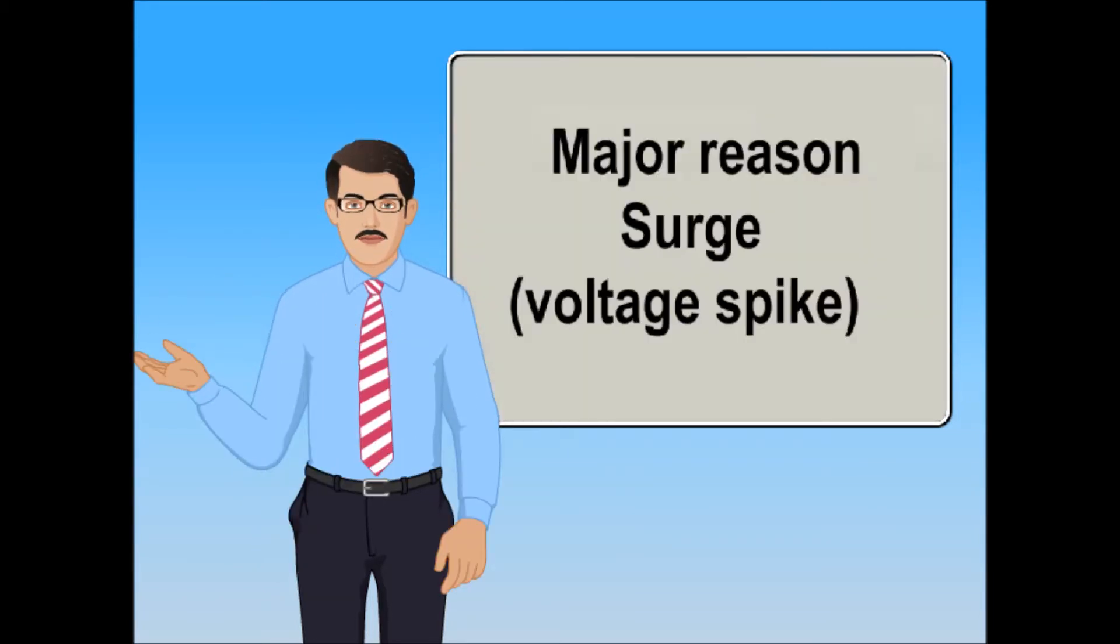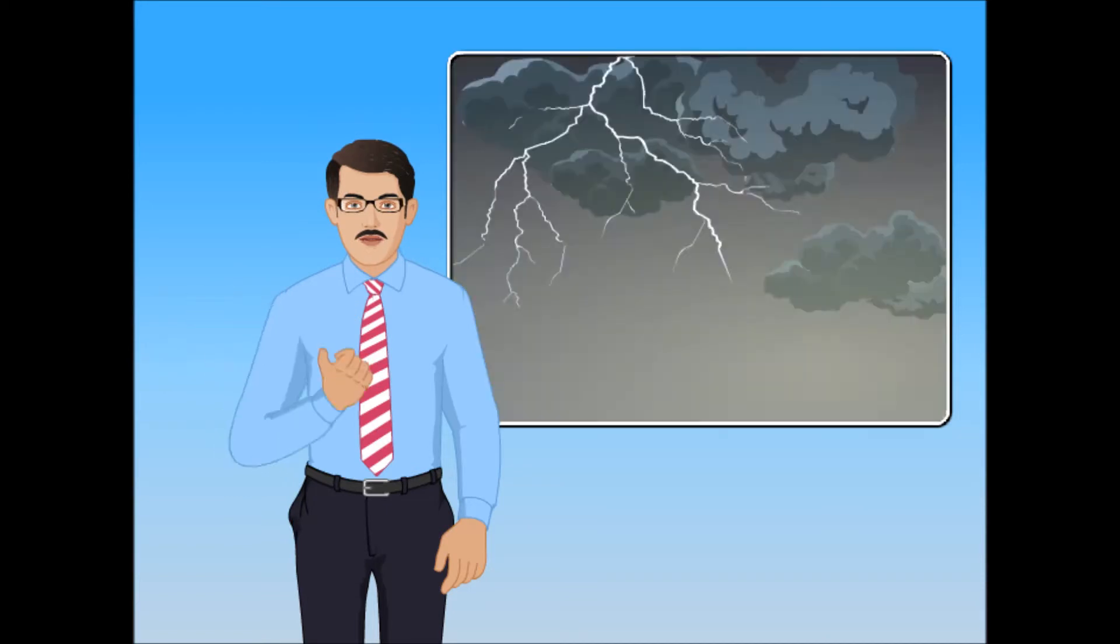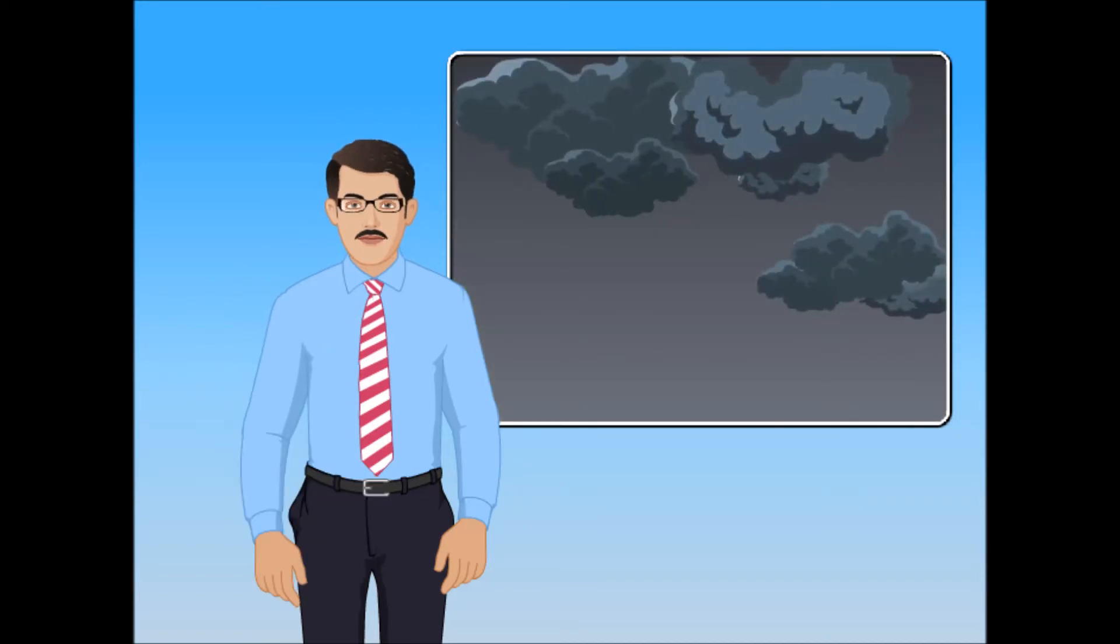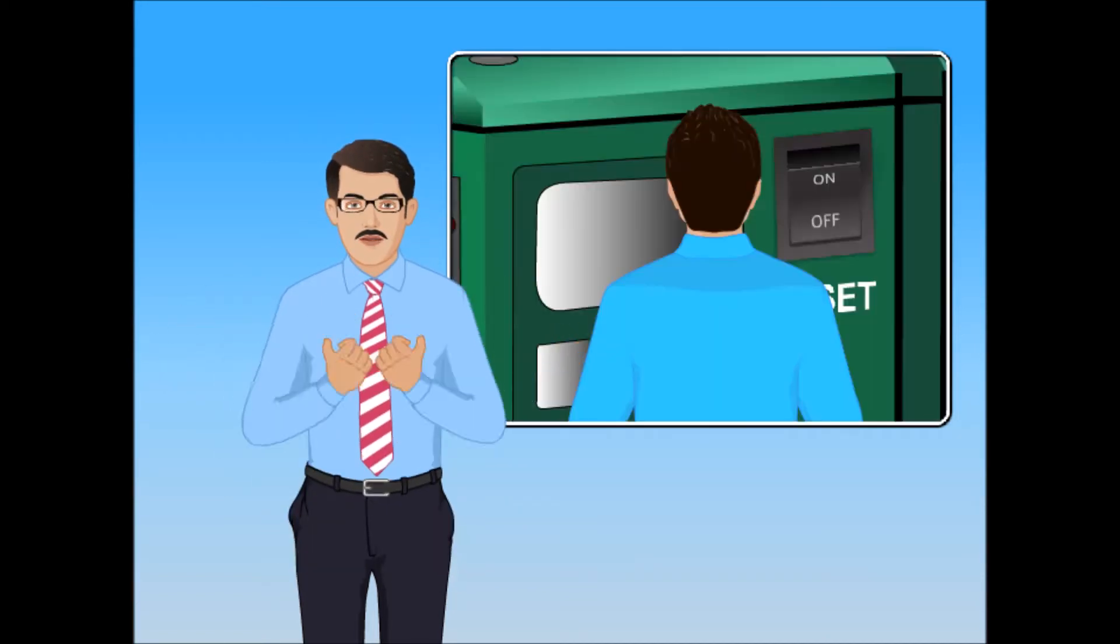The major reason behind these hurdles are surges or voltage spikes, which are caused by lightning, electromagnetic coupling, and switching on-off activities. Let's understand how surges can damage your machines and equipment.